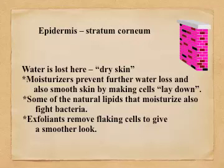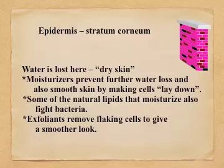Exfoliants — something rough or a liquid cleanser applied to the skin — remove flaking cells in the stratum corneum that are barely hanging on. This speeds up those cells falling off so the skin has a smoother, more uniform appearance as it reflects light.